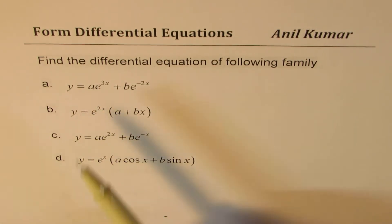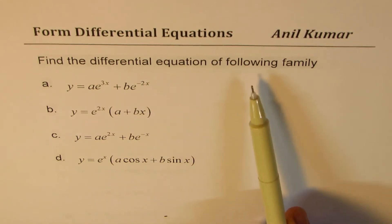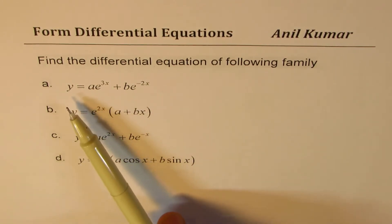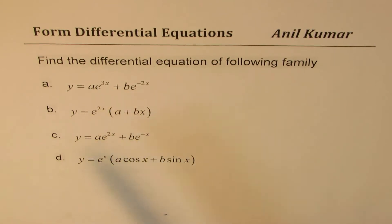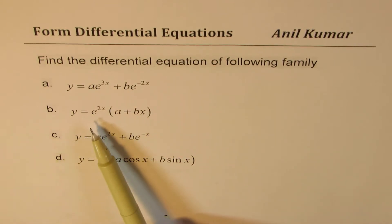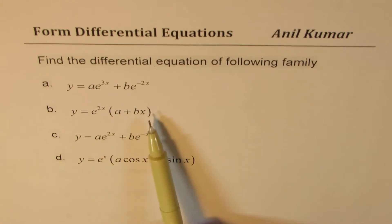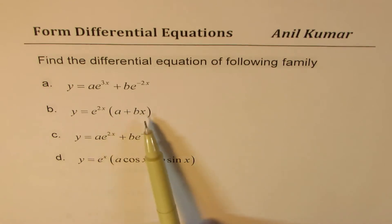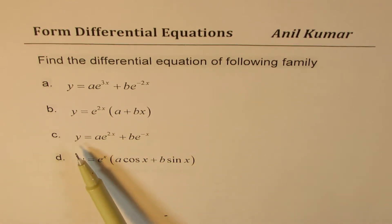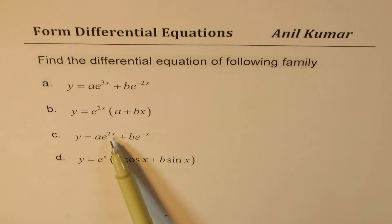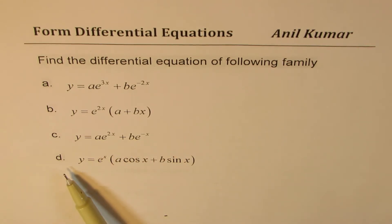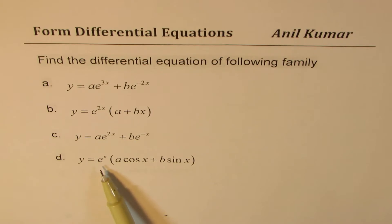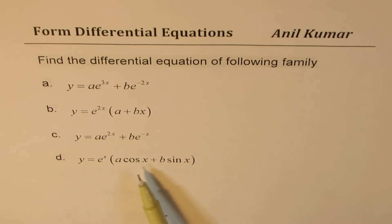The question here is to find the differential equation of the following families: (a) y = ae^(3x) + be^(-2x), (b) y = e^(2x)(a + bx), (c) y = ae^(2x) + be^(-x), and (d) y = e^x(a cos x + b sin x).